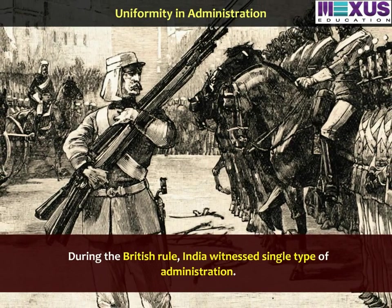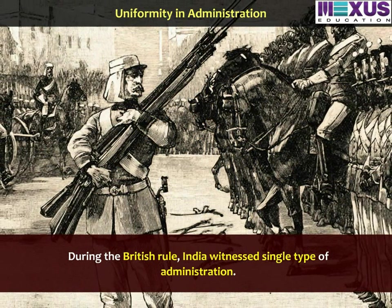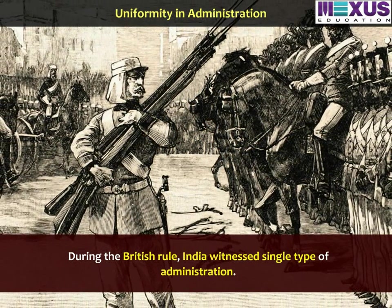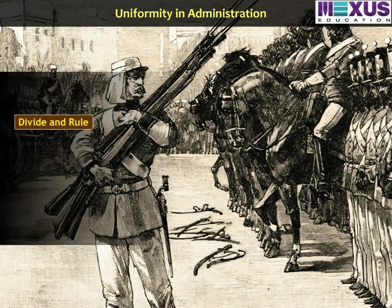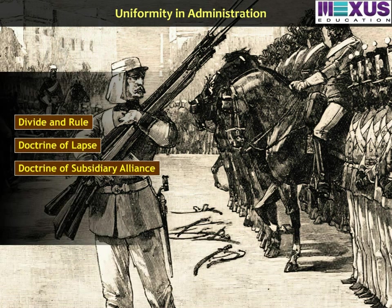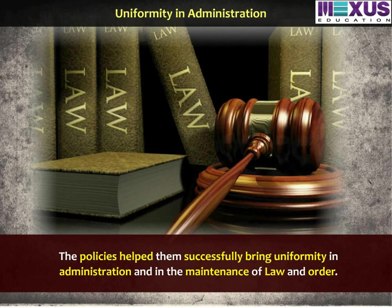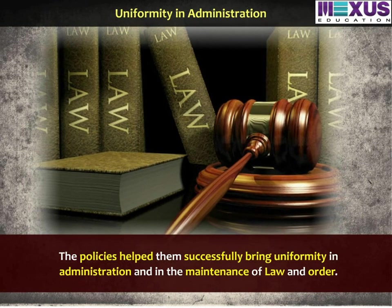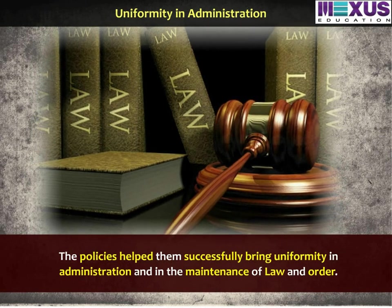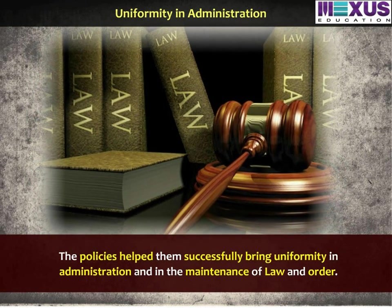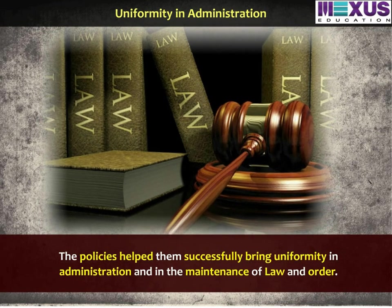During the British rule, India witnessed a single type of administration. The British implemented different policies like divide and rule, doctrine of lapse, and doctrine of subsidiary alliance to effectively exercise control over India. These policies helped them successfully bring uniformity in administration and in the maintenance of law and order.